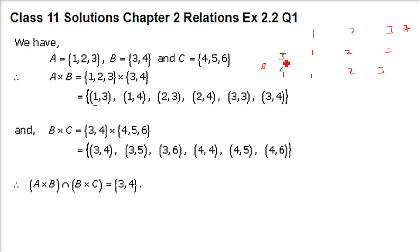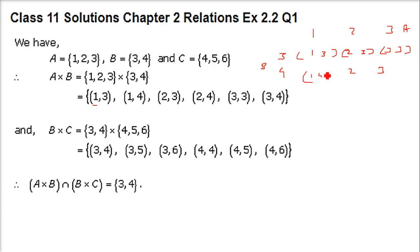The second member should come from B. So write 3, 3, 3 and then 4. So these are the ordered pairs. This is the way you can do it quickly.